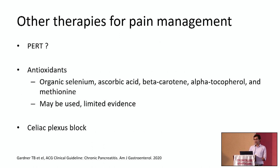Other therapies include pancreatic enzyme replacement therapy, which has been studied for pain but results are inconclusive — current American Gastroenterological Association guidelines do not recommend it as sole management for pain. Antioxidant therapy has shown some efficacy in several studies but evidence remains limited and preparations are not readily available. Celiac plexus block, performed under radiological or endoscopic guidance, can provide temporary pain relief of about two to three months and can be repeated at intervals or used as a temporizing measure.